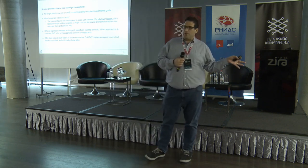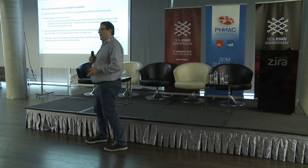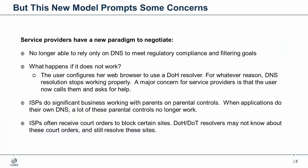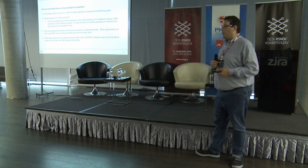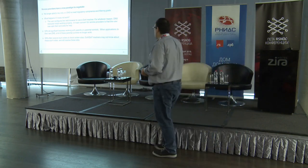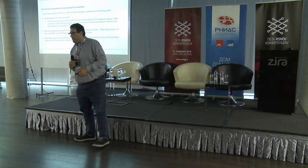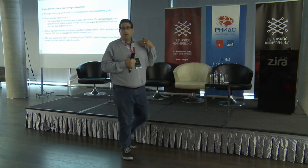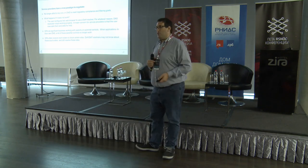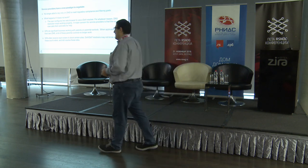Now some people say that's actually a feature, not a bug. But from a service provider perspective, that's actually a bad thing. We've also learned this year that ISPs do a lot of business on parental controls — it's a pretty big thing for them. The easiest way to implement parental controls is in the DNS, but if your users aren't pointing to your recursive resolver anymore, those parental controls don't work. ISPs often also receive court orders to block certain sites, and they can't do that in a DoH world.